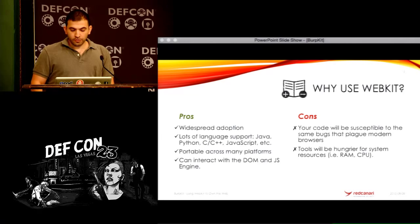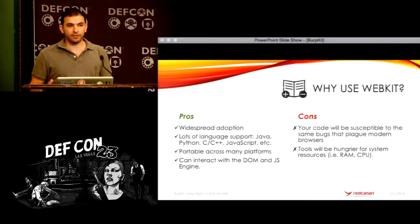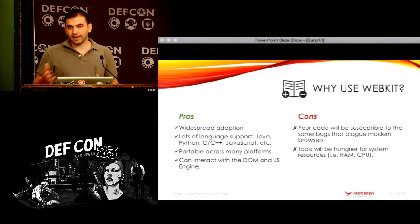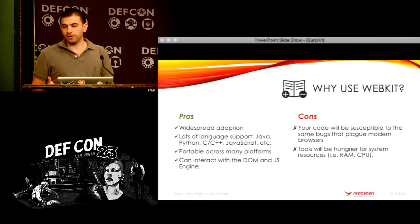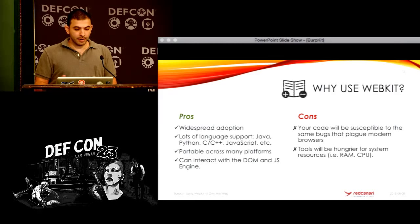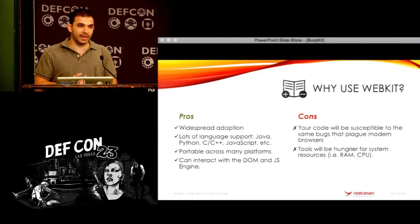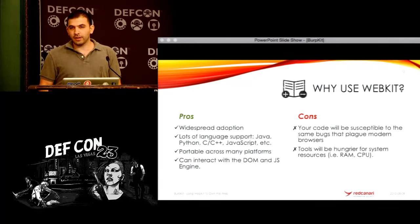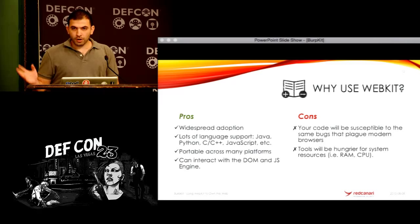So the question is: why use WebKit? The reason is primarily because of widespread adoption. The websites that are out there today are all going to be compatible with WebKit — you're not using the links browser where no website is catered to that technology. I want to use something that everybody is coding their websites for. The second part is that there's lots of language support — if you're looking for a language binding for WebKit, there's tons of stuff for Java, Python, C, C++, JavaScript. It's also portable across many platforms, primarily because Google and Apple wanted their browser to work on all major platforms.